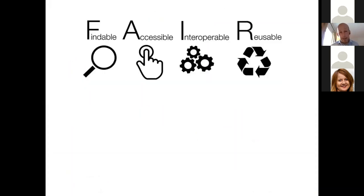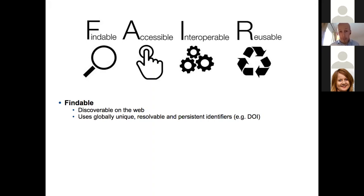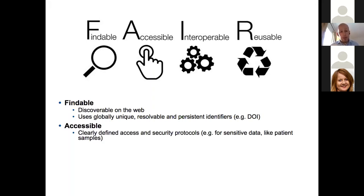FAIR: Findable, Accessible, Interoperable, Reusable — a lovely acronym that can help make your life better. Findable essentially means it's discoverable on the web. One way to ensure discoverability is to stop changing its address — use globally unique, resolvable, and persistent identifiers, such as a Digital Object Identifier, to give it a permanent address on the internet. Accessible means using clearly defined access and security protocols.